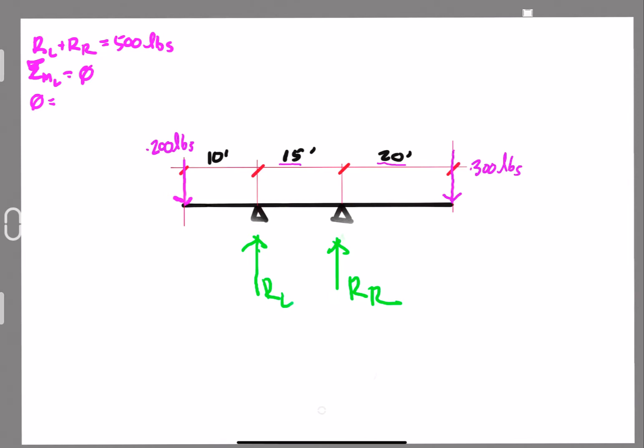And so zero is going to equal, and now we're going to go through and we're going to list all of the moments, right? So we have 200 pounds on the left. We'll start there and we'll work our way right. And notice that it has a 10-foot moment arm about the point that we're looking at, the reaction left. Now, that is going to go counterclockwise, notice, right? That 200 pounds is at 9 o'clock relative to the left-hand reaction, and it's pushing down towards 6 o'clock, so against the clockwise motion. Now, let's call that positive. Let's say that counterclockwise is going to be positive. So that's going to equal 200 pounds, and it's going to have a moment arm of 10 feet.